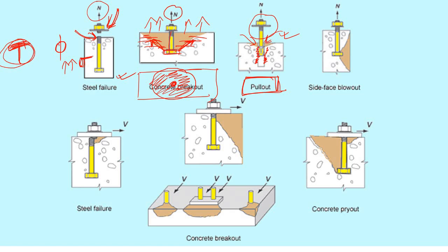One version of concrete breakout is side face blowout. If the anchor bolt is placed at the edge of the pedestal rather than the center, the circular breakout formation cannot be completed. Before the crack reaches the top, the side will blow out. You must ensure there is sufficient reinforcement at the side to resist this side face blowout when the edge distance is very small.